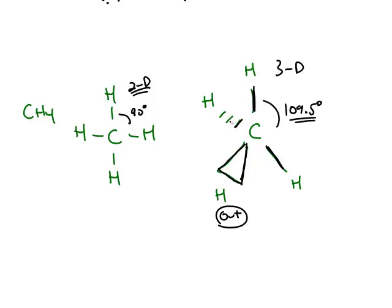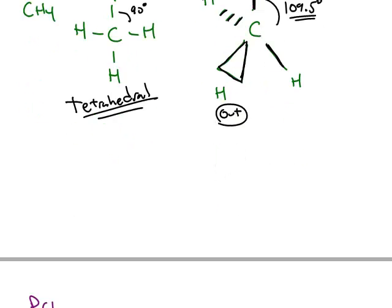And the dash is the opposite of the wedge. This means it's going into the paper, it's going away from you. This shape is called tetrahedral. And because carbon is such a common element, the tetrahedral shape is a very important three-dimensional shape.